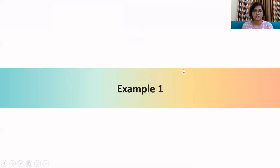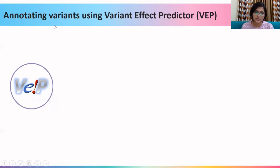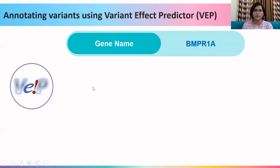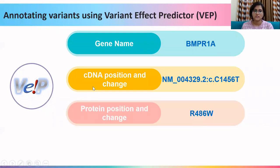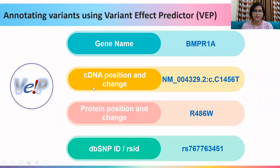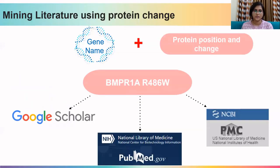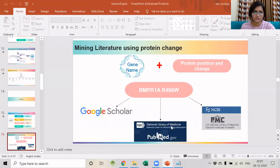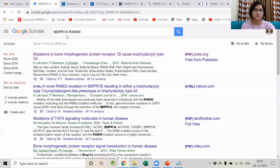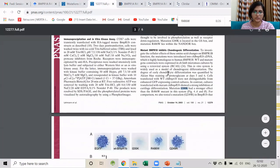Let us look at the first example. I processed the VCF file using VEP and obtained the gene name, the cDNA position, the protein change, and the RSID. For annotating this variant and mining the literature, I need to use the gene name along with the protein change and position. I will first use this information to search on Google Scholar. As you can see, I found about 14 results — 14 articles mention this particular variant. I will open the first link and use the PDF link to open the full text of this article.